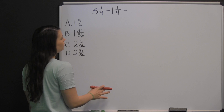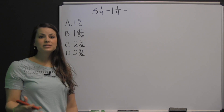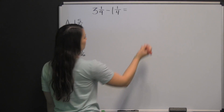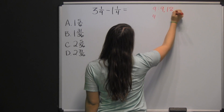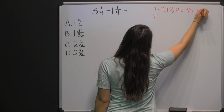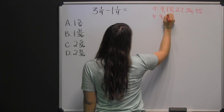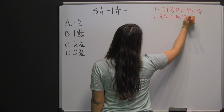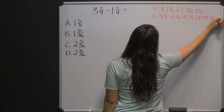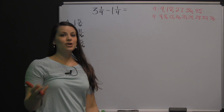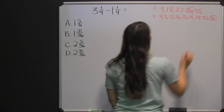The least common denominator for nine and four would be 36. If you're unsure of how to find that, you simply list the multiples of each denominator. The multiples of nine are 9, 18, 27, 36, 45, etc. The multiples of four are 4, 8, 12, 16, 20, 24, 28, 32, 36, etc. So, as you can see, the least common multiple for nine and four is 36 — that's the smallest number they have in common.